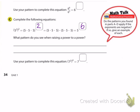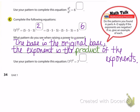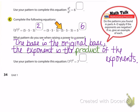What pattern do we see when raising a power to a power? The base stays the same — we've got a base of five, so the base is the original base. The exponent is the product of the exponents. To get six, I took three times two. That makes sense because five was used as a factor three times, and I did that twice — two times three gives me six.